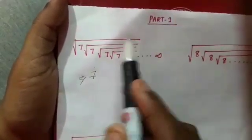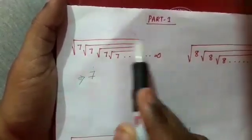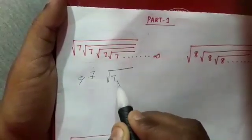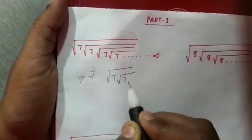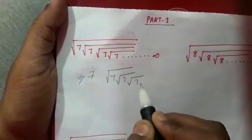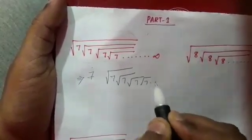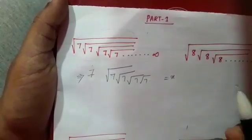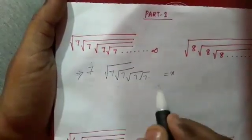To solve this, we work with the term with x. Therefore, root 7, root 7, root 7, root 7 is equal to x — that's why we write it on both sides.